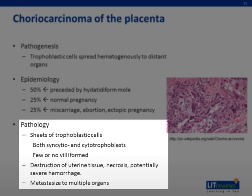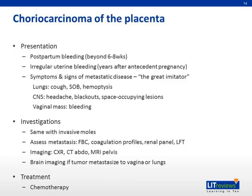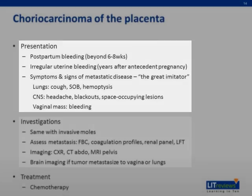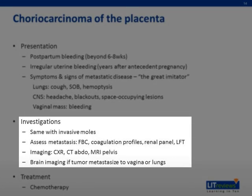Metastatic disease is also common, with potential metastasis to organs such as the lungs, vagina, pelvis, brain, liver, intestines, and kidneys. Patients with choriocarcinoma commonly present with postpartum bleeding or irregular uterine bleeding years after a pregnancy. It is also known as the 'great imitator' because patients can present with signs and symptoms of many disease entities. The diagnosis of choriocarcinoma is similar to invasive moles, and metastasis should be assessed with a full blood count, coagulation profiles, renal panel, and liver function tests.